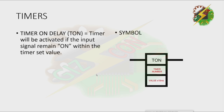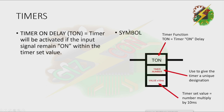Let's go to timers. Timer on delay: the timer will be activated if the input signal remains on within the timer set value. We have the timer function T on, which is equivalent to timer on delay. It is used to give the timer a unique designation — for example, timer 0, timer 1, timer 2, etc. For the timer set value, whatever value you put, multiply it by 10 milliseconds to get the set value.